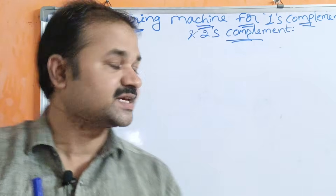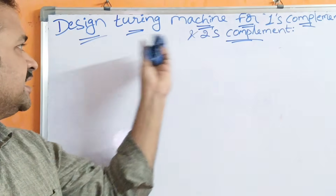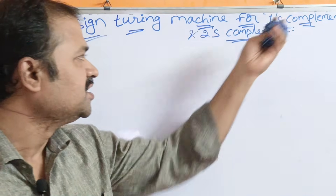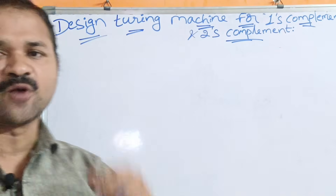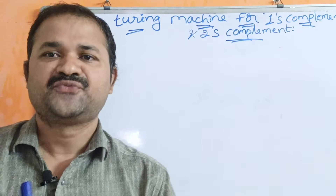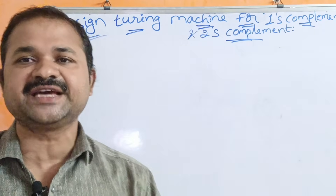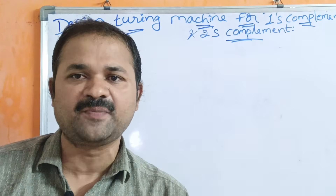Now let us solve these two examples: design a Turing machine for 1's complement and 2's complement. First, let us see how we can design a Turing machine for 1's complement.